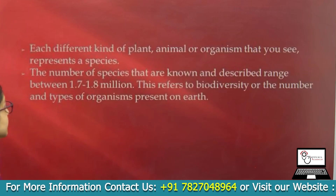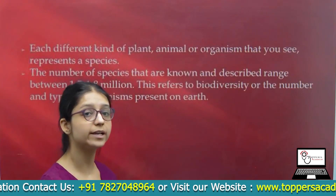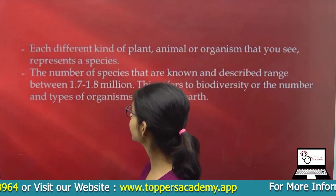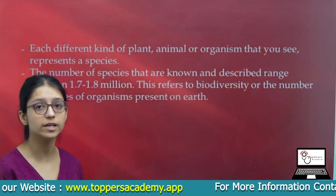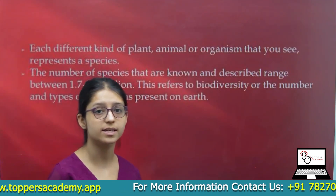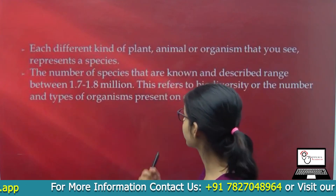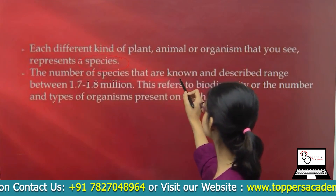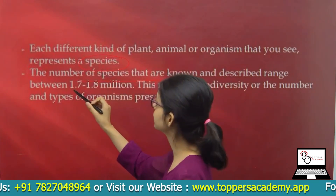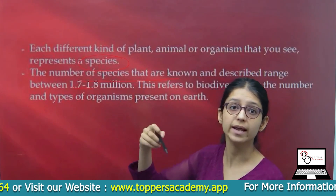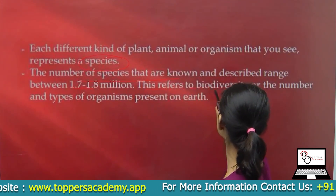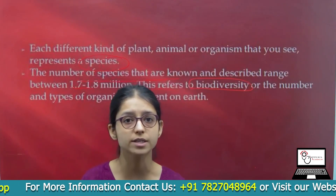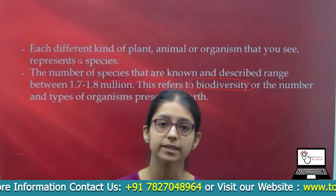These different kinds of plants, animals, and organisms that we see represent species. There are different kinds of organisms on earth, such as plants and animals, that represent species. The number of species that are known and described is between 1.7 to 1.8 million. This refers to biodiversity — the vast number of organisms on earth that represent biodiversity.